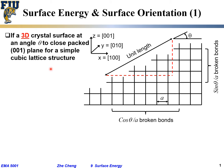Let's draw it for a simple cubic structure. What I'm drawing is a side view for a simple cubic lattice structure — simple cubic, not even FCC, simpler than that. What's the coordination number for simple cubic? It's just top, down, left, right, front, and back — 6.